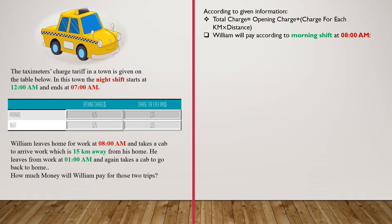We know that the distance between William's house and workplace is 15 kilometers. So we can now calculate the total price. The total charge that William pays for the morning trip is 4.25 plus 2.25 multiplied by 15.